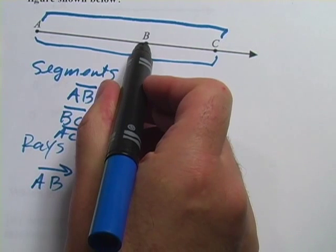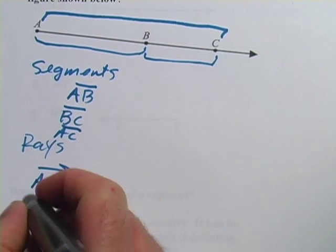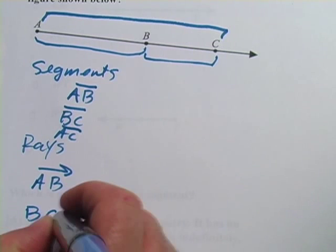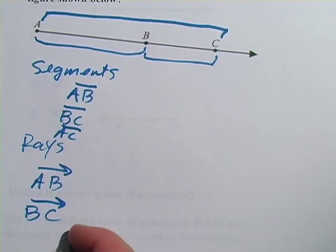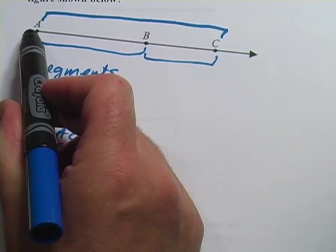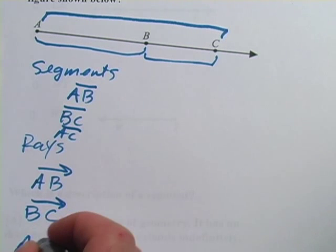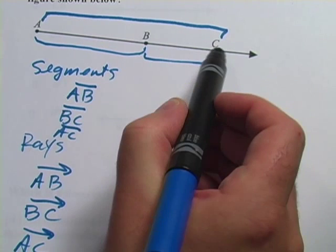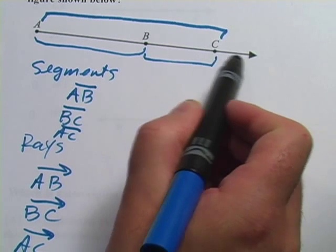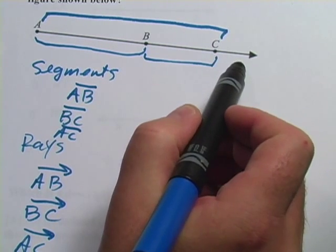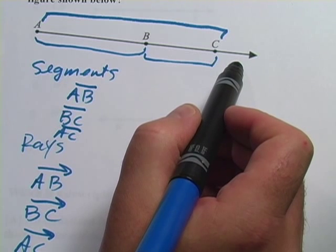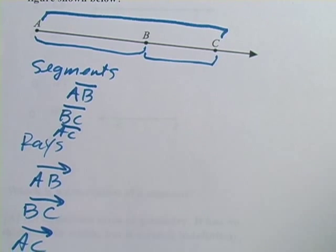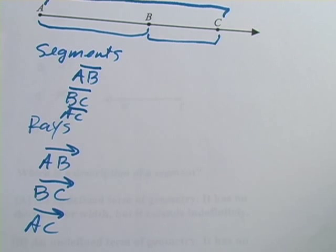It could be ray BC starting at B and going through C and on off forever. Or you could write this as ray AC. And I think that's all of them. You can't write this as ray C something because there's no other point. You need that second point to define a ray.